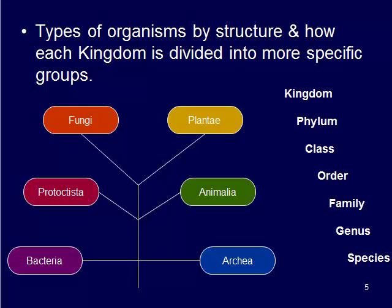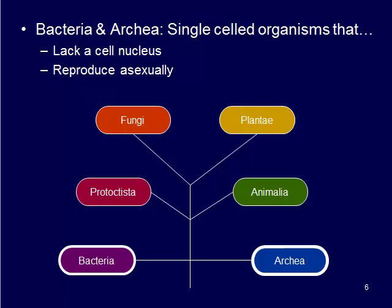The major kingdoms are bacteria and archaea, protista, fungi, plant, and animalia. Bacteria and archaea are single-celled organisms — they lack a cell nucleus and they reproduce asexually. These are very small, microscopic organisms.